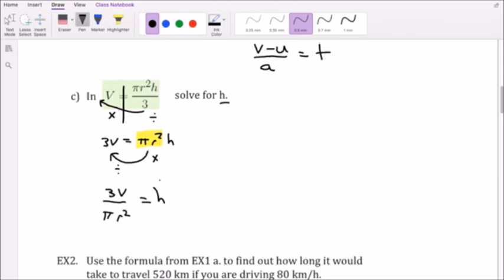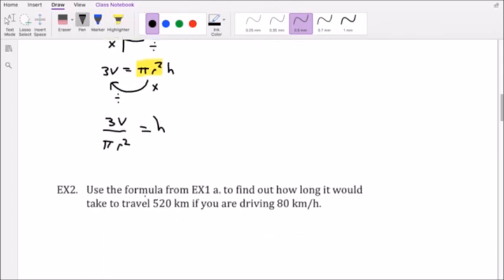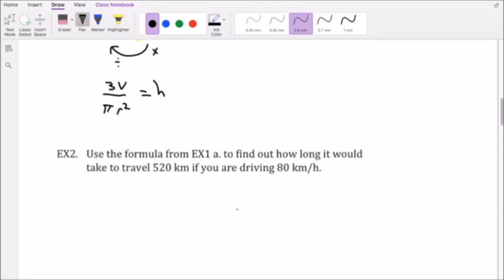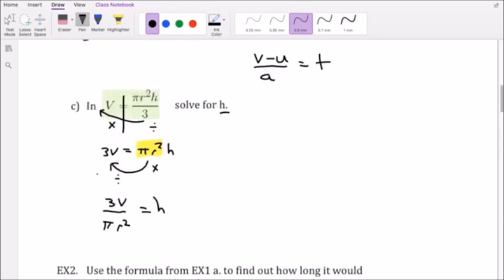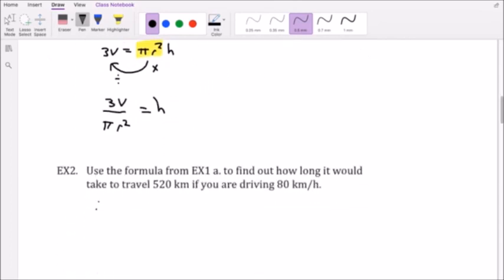My last example here is use the formula for example one to find how long it would take to travel 520 kilometers if you drive 80 kilometers per hour. Okay, so what was the format? The original formula: distance equals speed times time. Now if I was doing this question I would write out everything I know, everything I could know, and then fill in what I have.